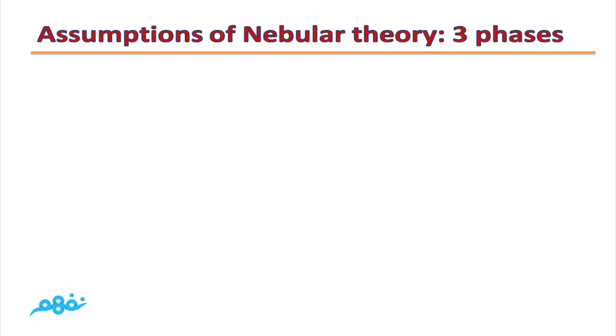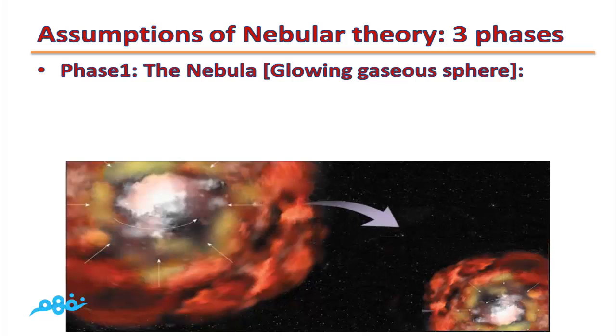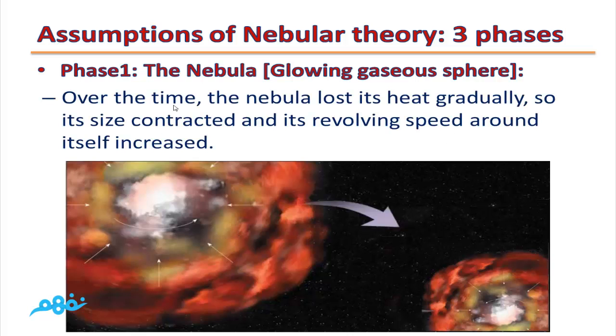The assumptions of Nebular Theory, three phases. Phase number one: The nebula, or glowing gas sphere. Over time, the nebula lost its heat gradually. So its size contracted and its revolving speed around itself increased.